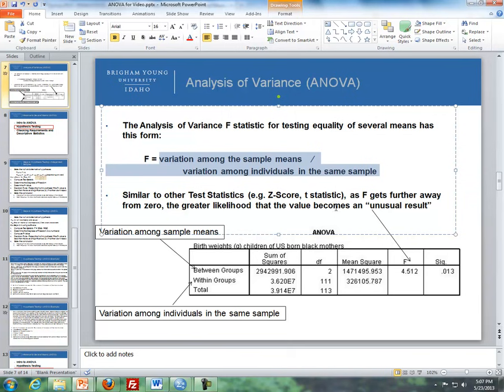as F gets further away from zero, the greater likelihood that the value becomes an unusual result. Here's an example of an ANOVA table. There are four basic levels of understanding you should know about an ANOVA table. First, this first row represents the variation among sample means.